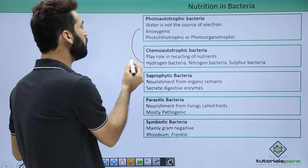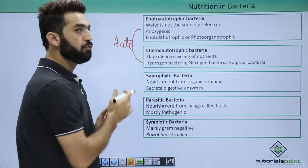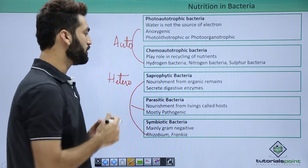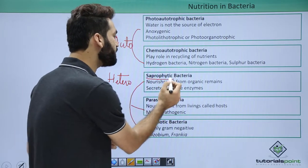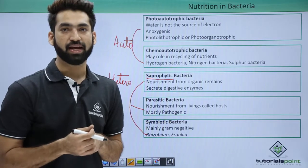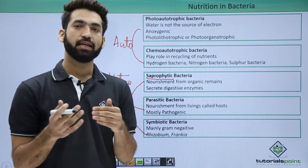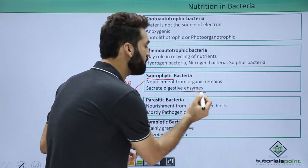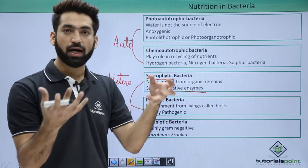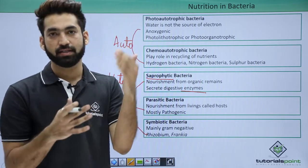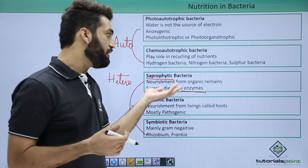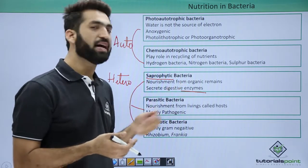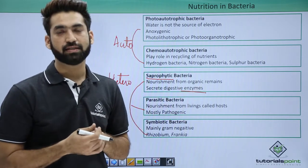Photo-autotrophic and chemo-autotrophic are the two autotrophic modes, where bacteria prepare food themselves. The remaining three — parasitic, saprophytic, and symbiotic — are heterotrophic modes. Saprophytic bacteria drive nourishment from dead, decaying remains such as dead animals, plants, or leaf litter. The bacteria secrete digestive enzymes that convert complex hydrocarbons into simpler carbon compounds. They are useful because they aid decomposition, and saprophytic bacteria are also used in wastewater treatment to clean the earth's surface.